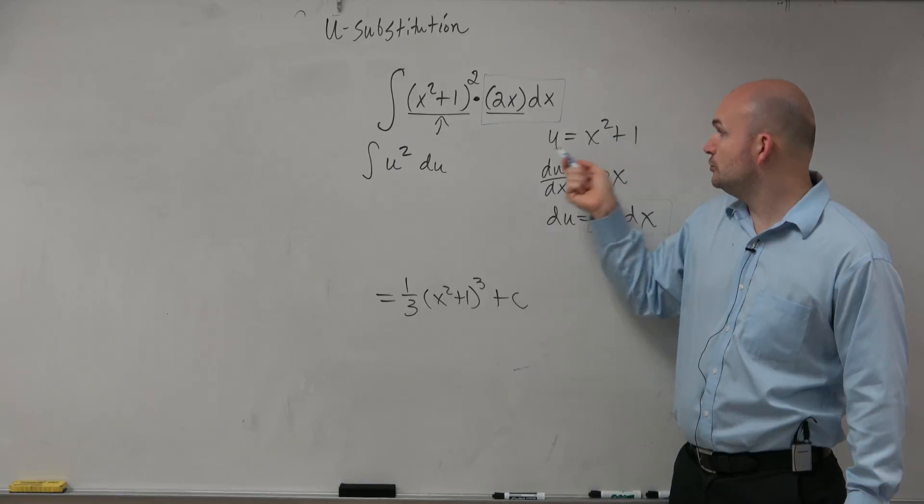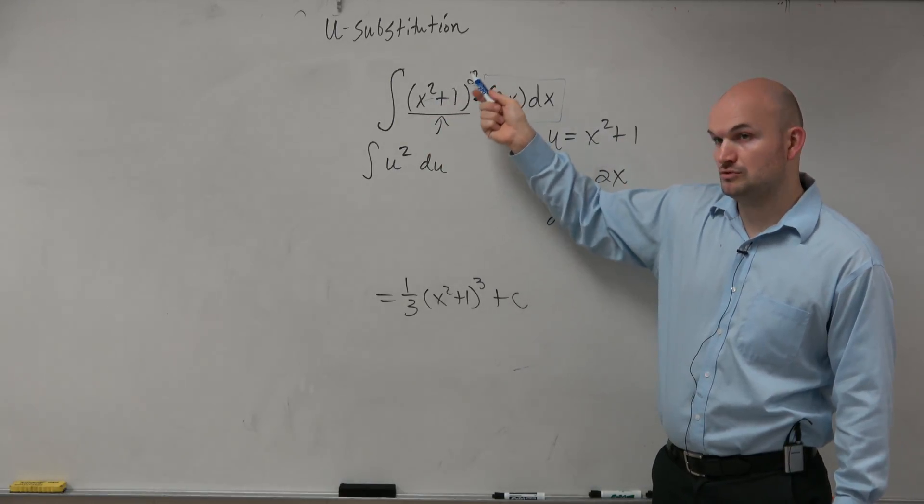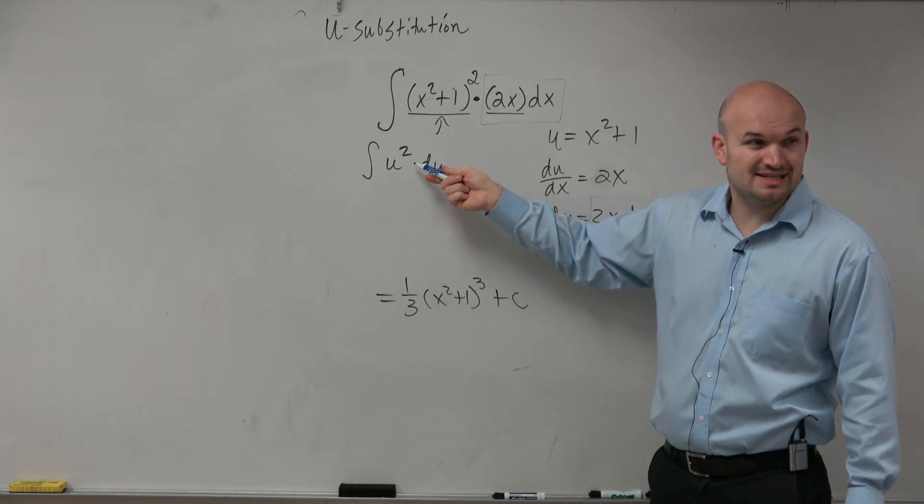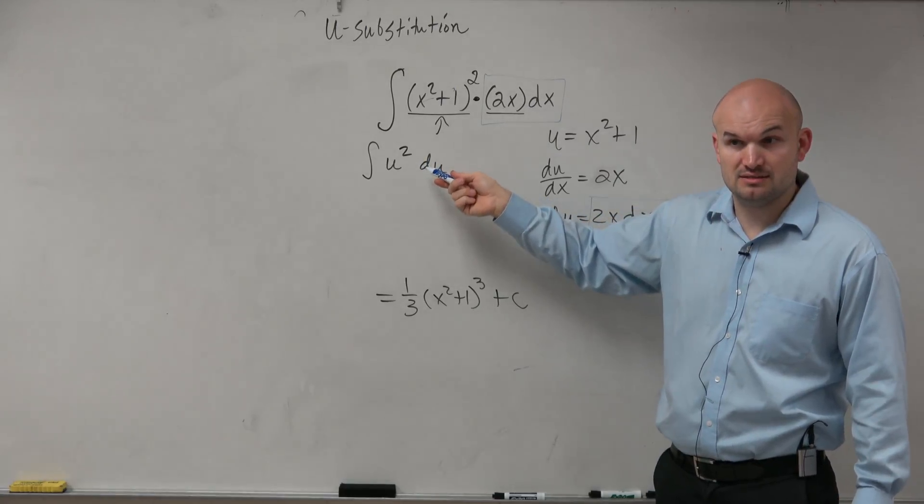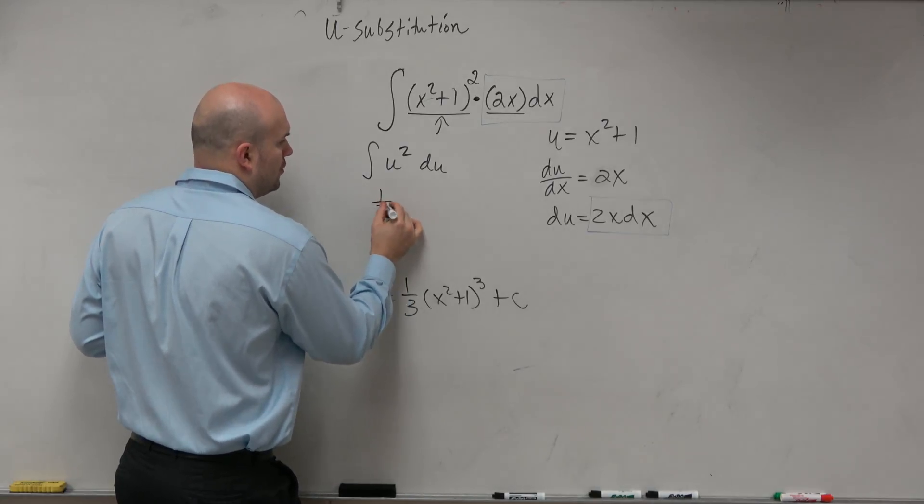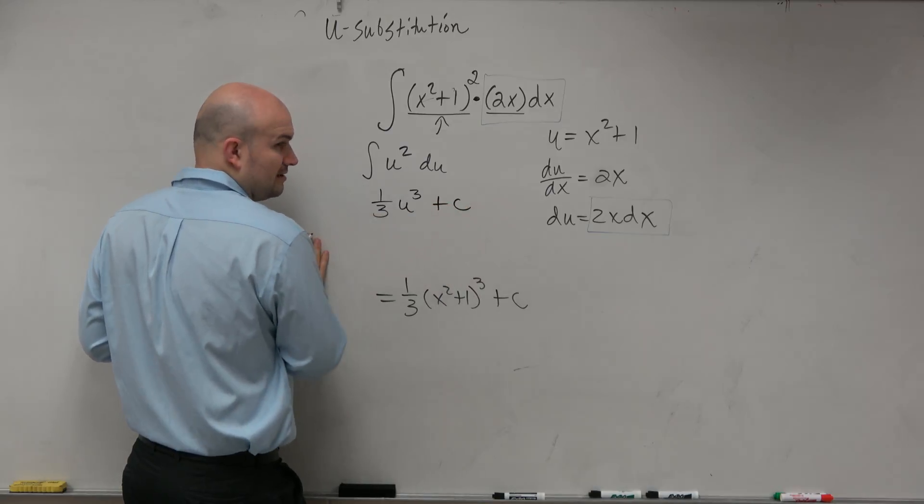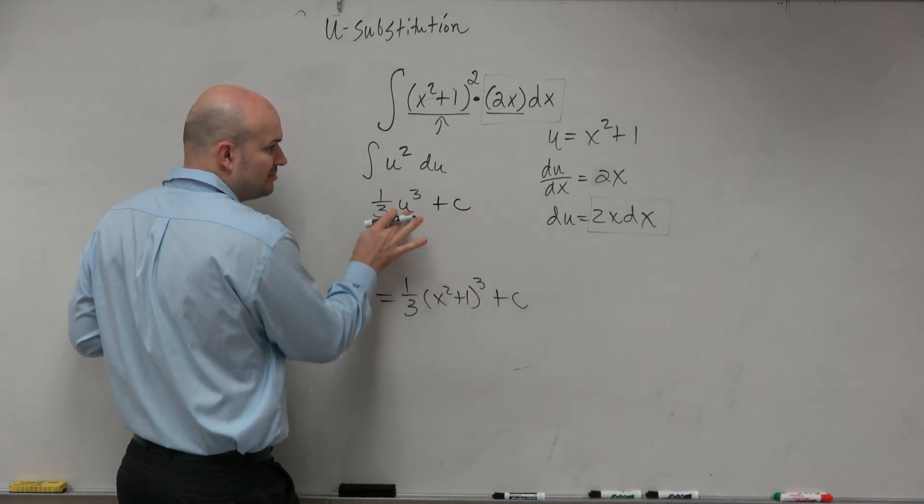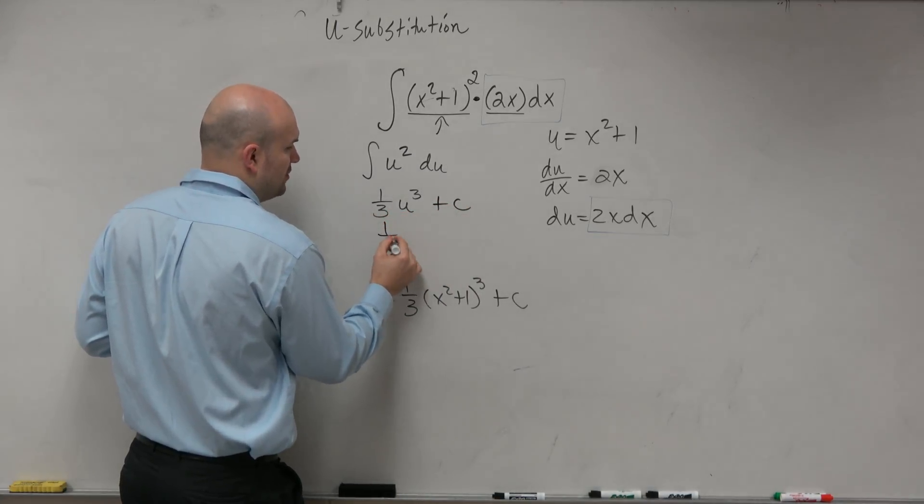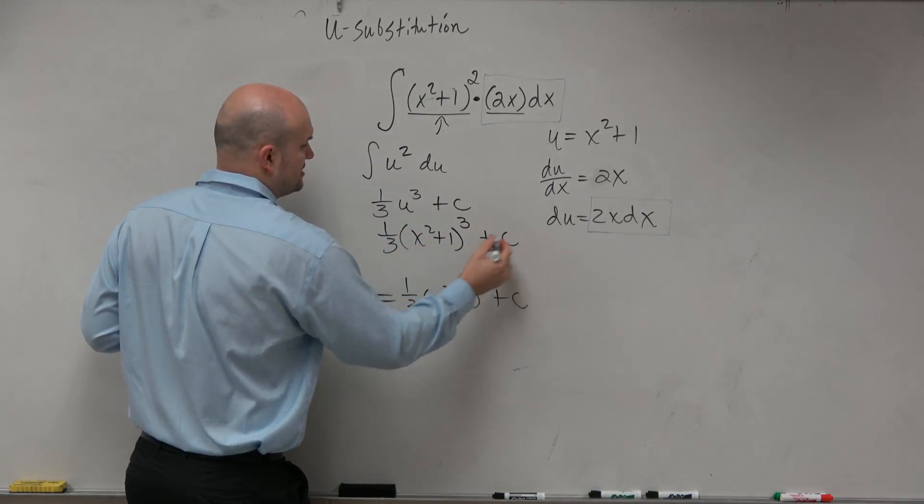And then we're just saying we're just replacing x squared plus 1 squared as u squared. Because this is pretty easy to integrate, right? So if we integrate this, we have 1 third u cubed plus c. And then all we have to do is plug back in our u. So it's 1 third x squared plus 1 cubed plus c.